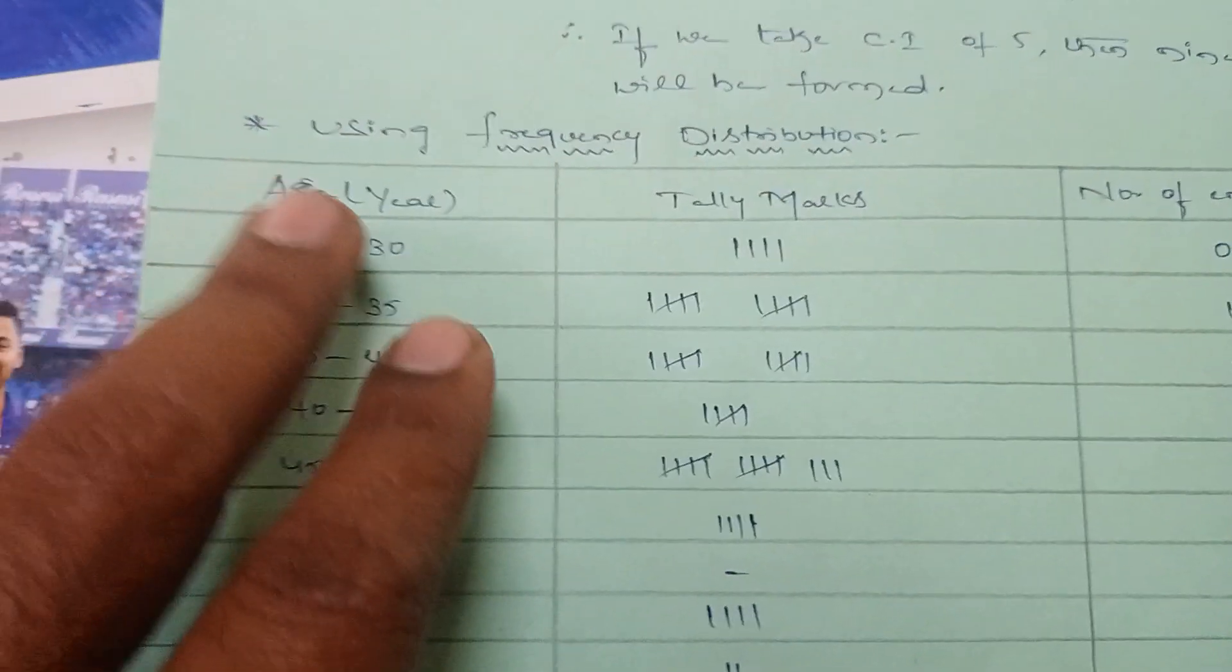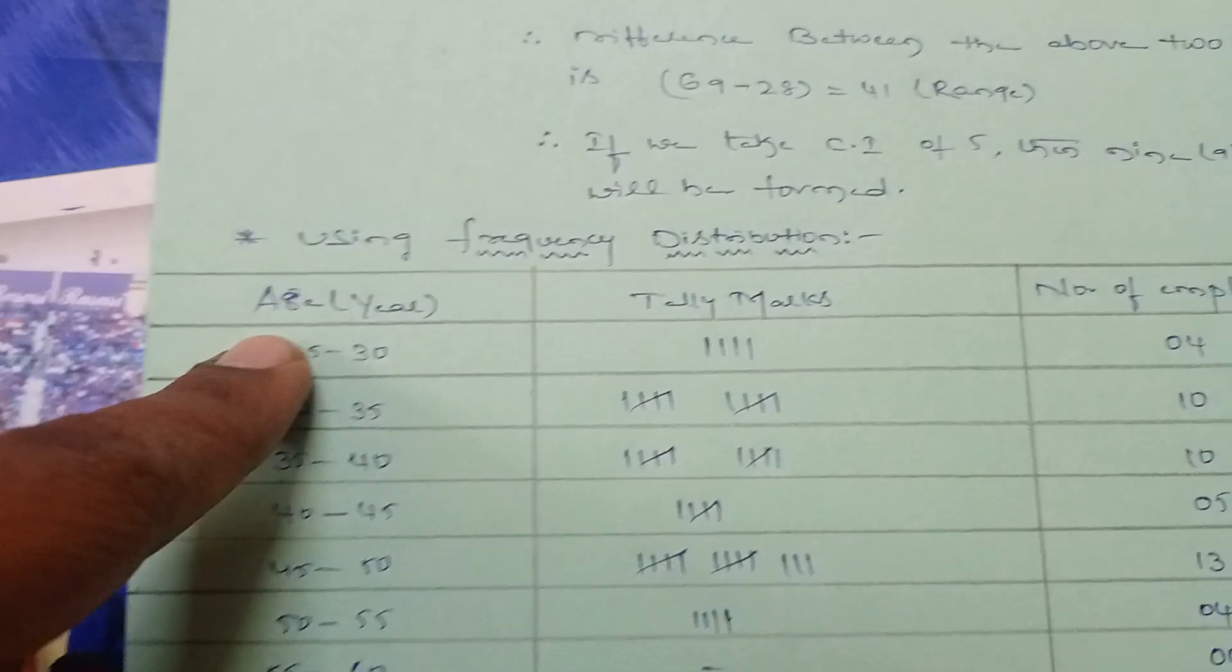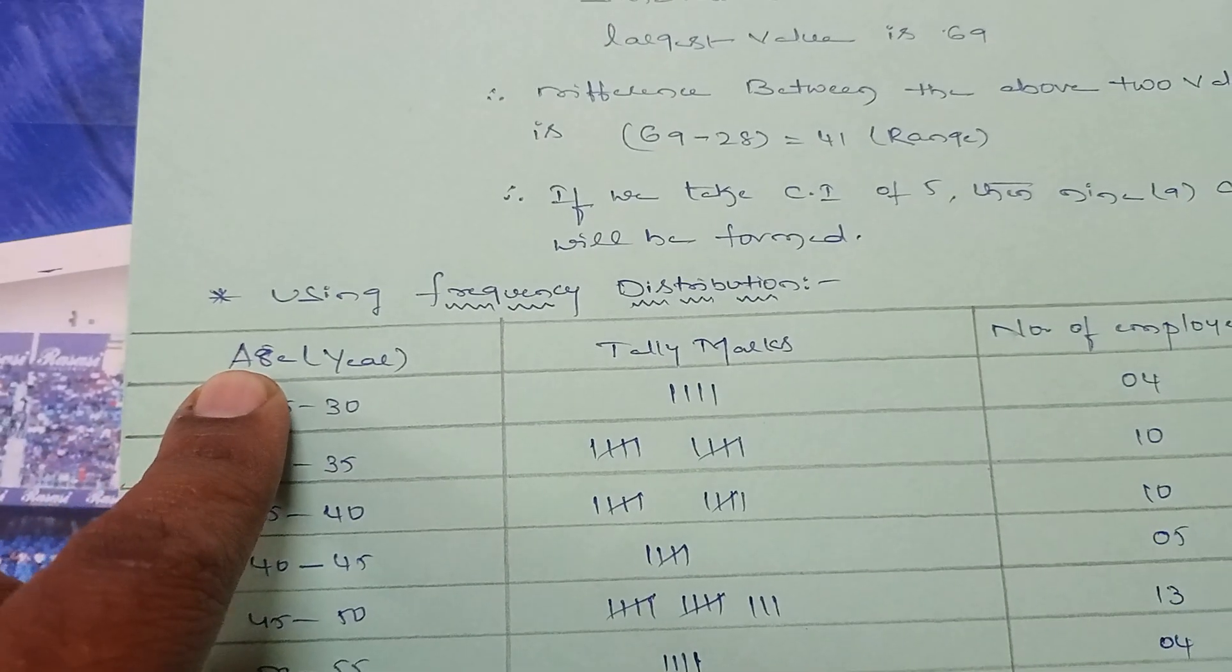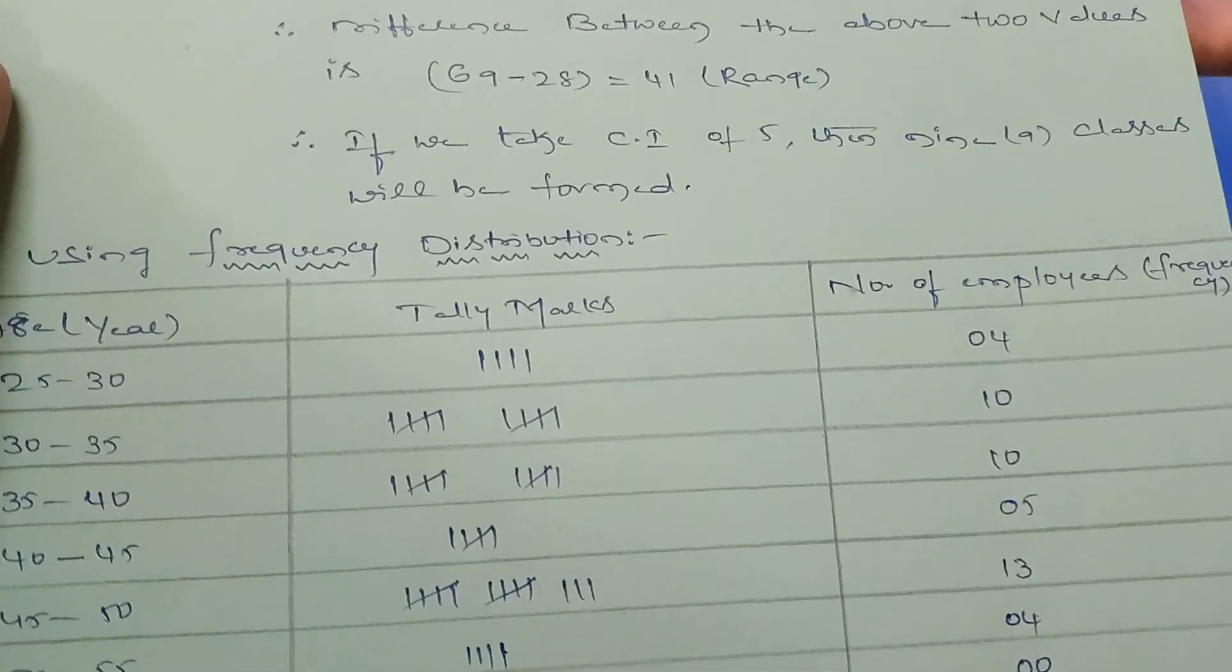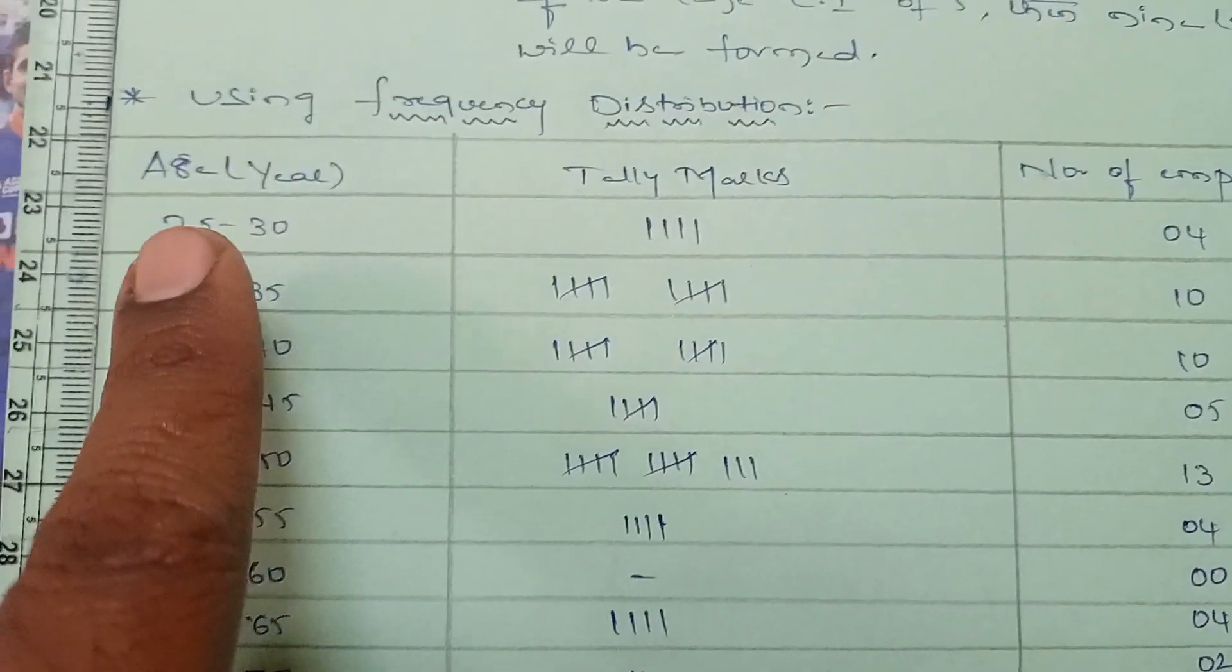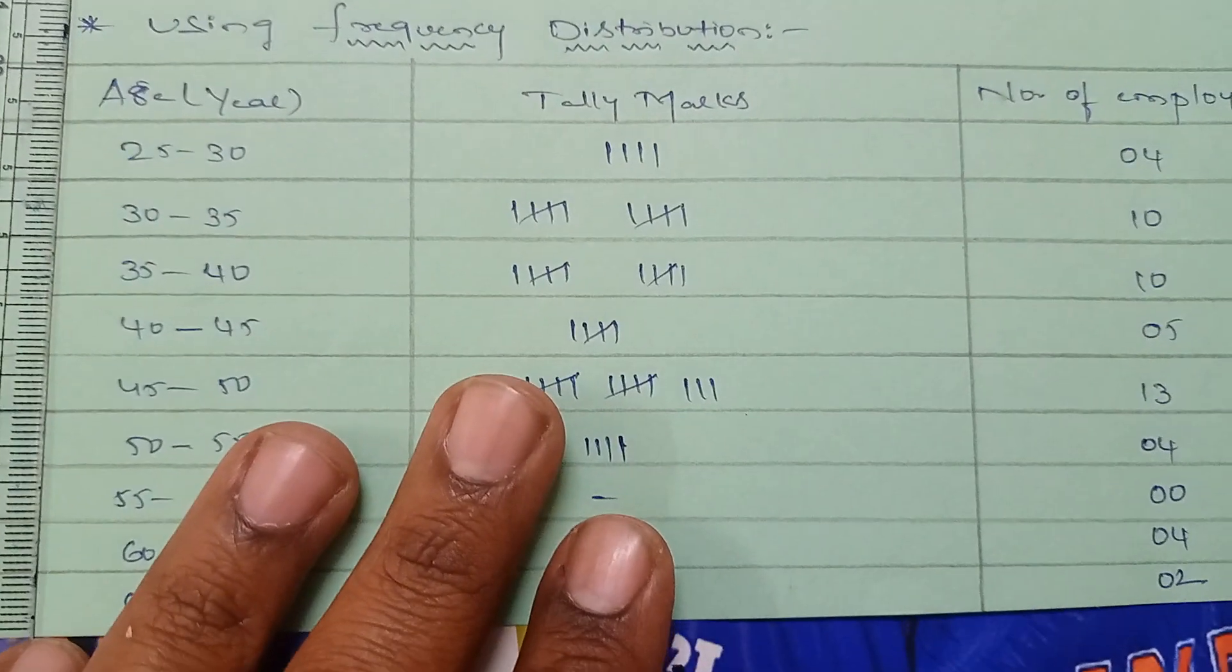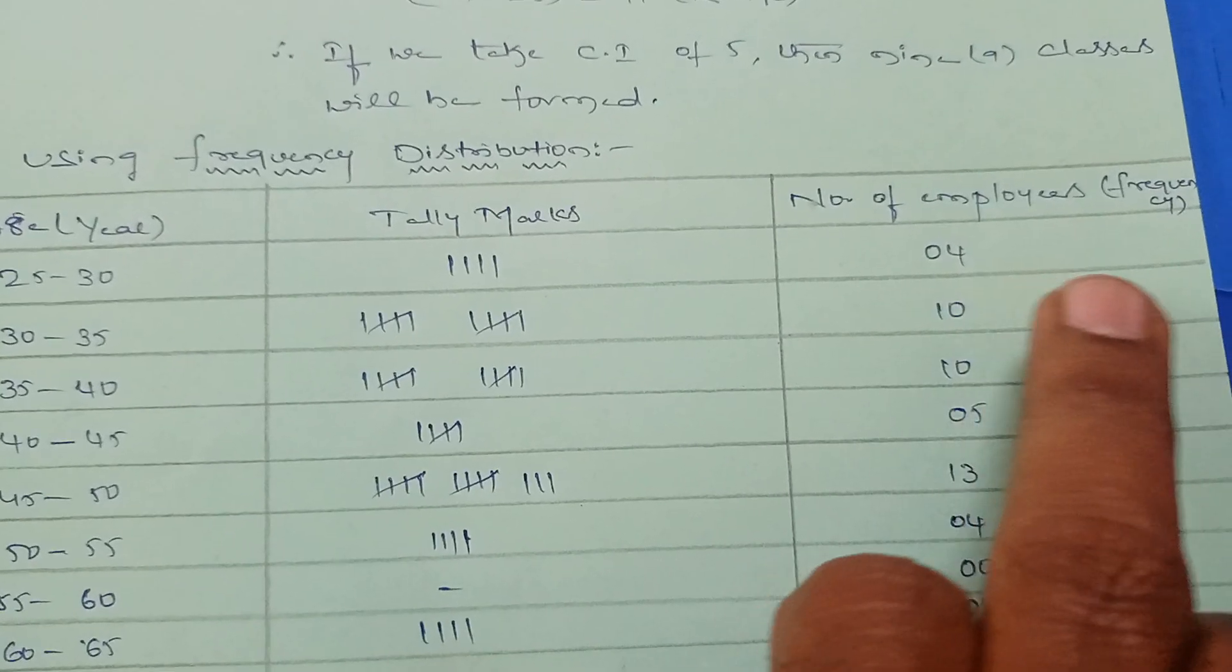Take a tabular form using frequency distribution. First column: ages. Second column: tally marks. Third column: number of employees, which we call frequency.